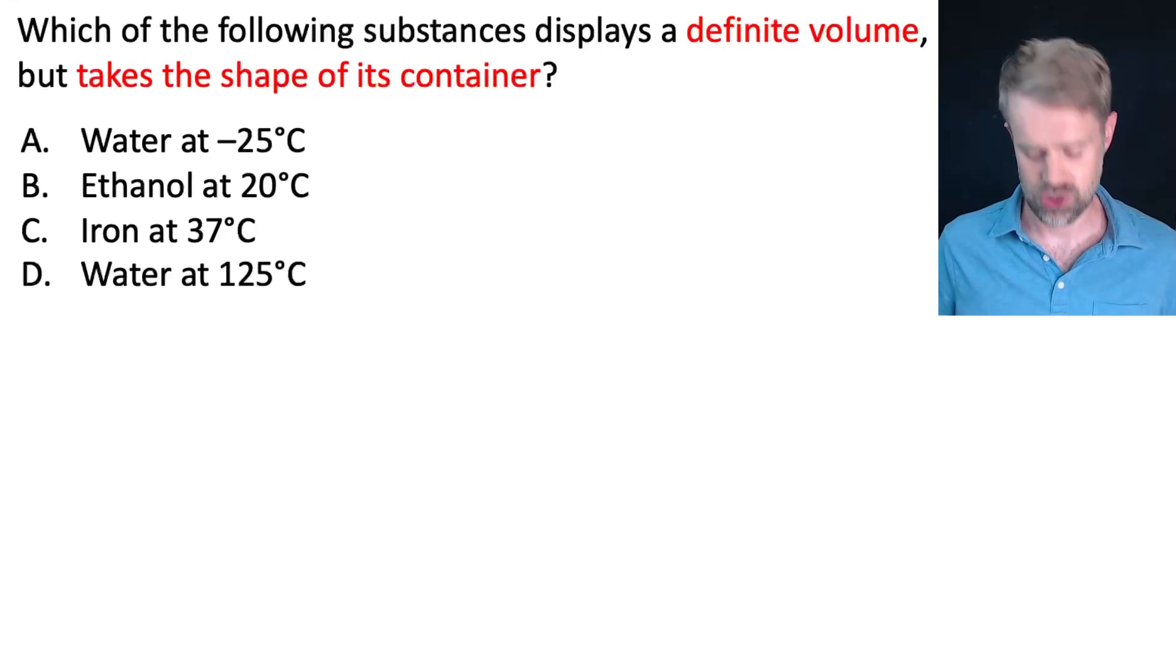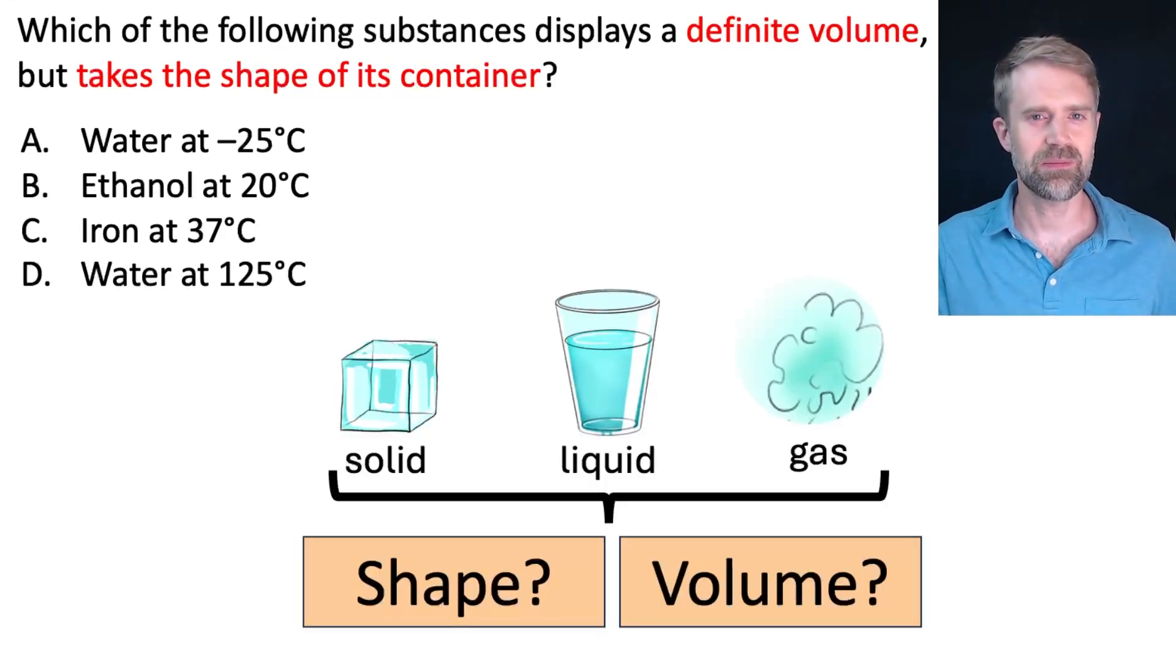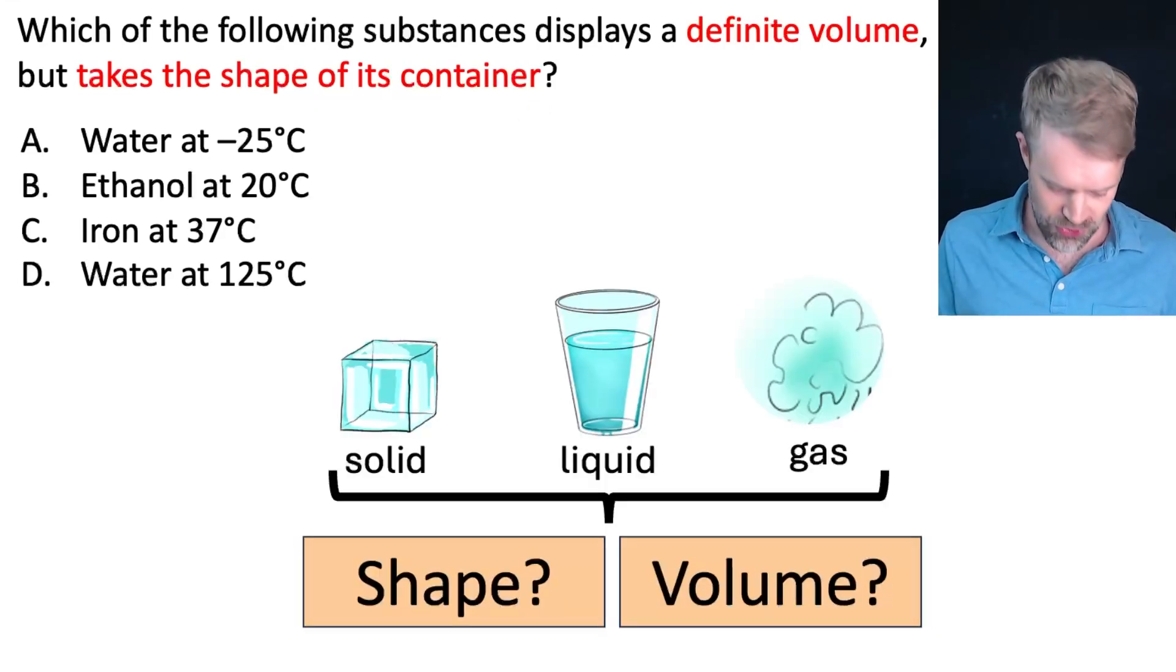We're looking for a substance with a definite volume and that also takes the shape of its container. Do you know what it's talking about here? Well, for the three states of matter, solid, liquid, and gas, it's important to know information about their shape and volume. We'll use these two pieces of information to figure out whether the question is talking about a solid, liquid, or gas.